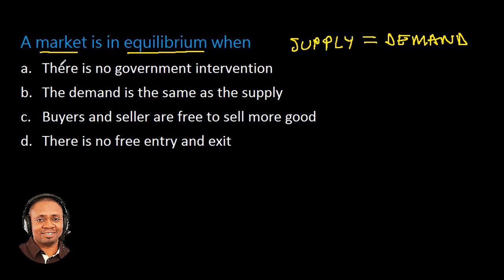So let's check the answer options. Option A: there is no government intervention. No. Option B: the demand is the same as the supply. Exactly — supply is equal to demand; the supply in the market is equal to the demand in the market.